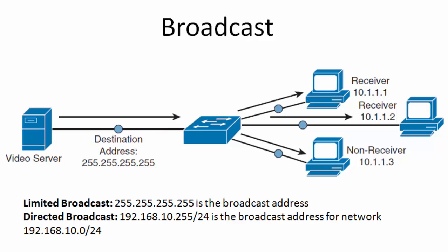The second type is broadcast. In broadcast, traffic travels from a single source to all destinations. Look at this diagram. If this video server sends a packet to the broadcast address 255.255.255.255 as a destination address, this packet will be received by all devices on the network segment. This is called limited broadcast, and this type of broadcast cannot be forwarded by routers.